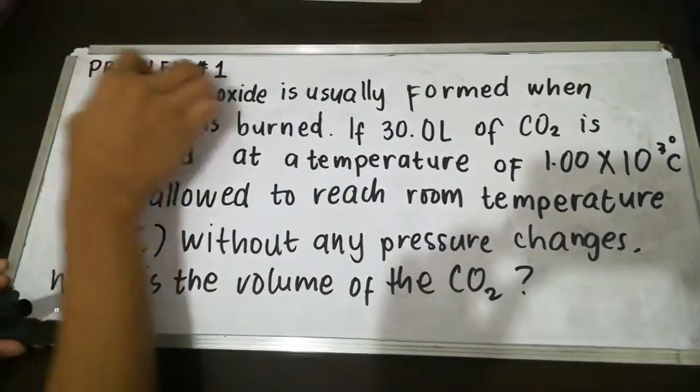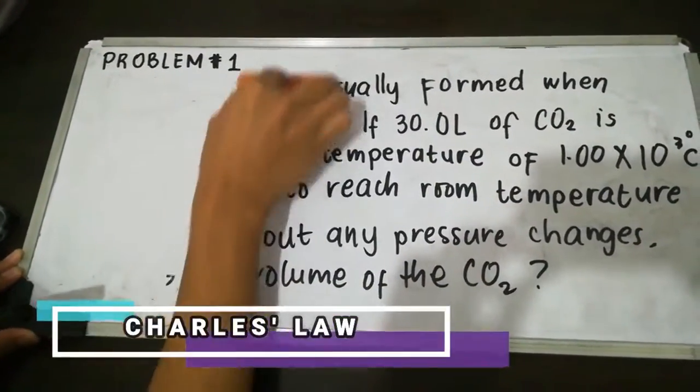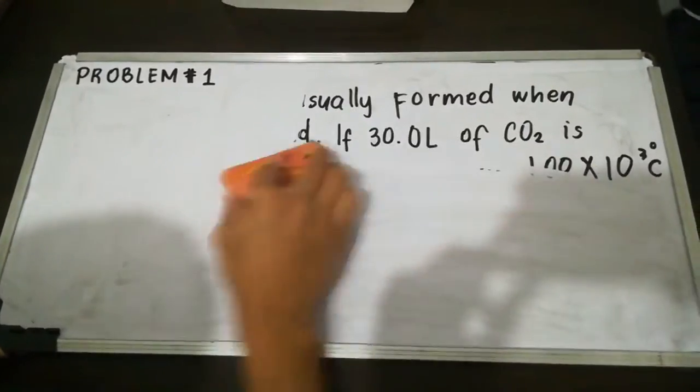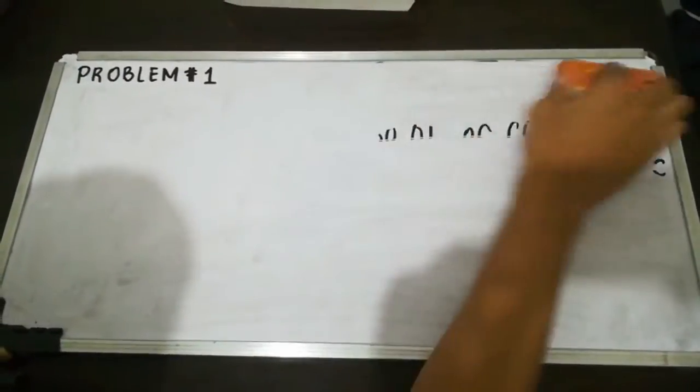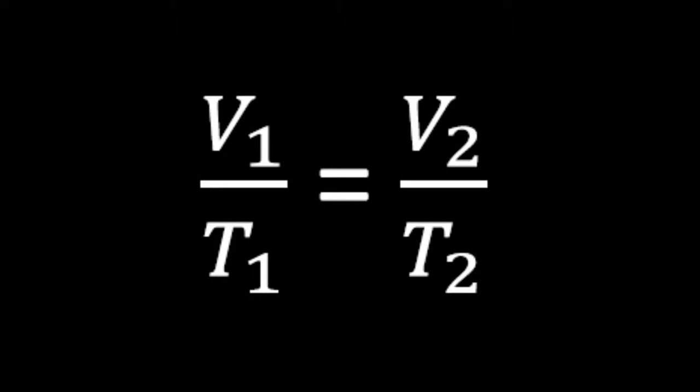We can apply Charles' law to solve this problem. According to his law, the ratio of the initial volume and the initial temperature is equal to the ratio of the final volume and the final temperature. So, our equation will be V1 over T1 equals V2 over T2.